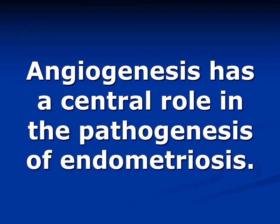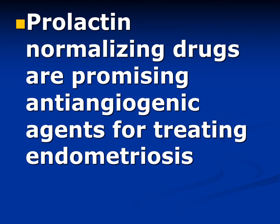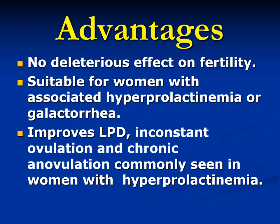Post-treatment VEGF and alpha smooth muscle actin both significantly decreased after cabergoline treatment by different statistical analyses. These findings and other studies confirm that angiogenesis has a central role in the pathogenesis of endometriosis, and that VEGF and alpha smooth muscle actin are equally effective indicators of angiogenesis, especially when detected in the blood vessels of endometriotic lesions. Prolactin-normalizing drugs are therefore promising anti-angiogenic agents for treating endometriosis, as they cause starvation of endometriotic lesions.